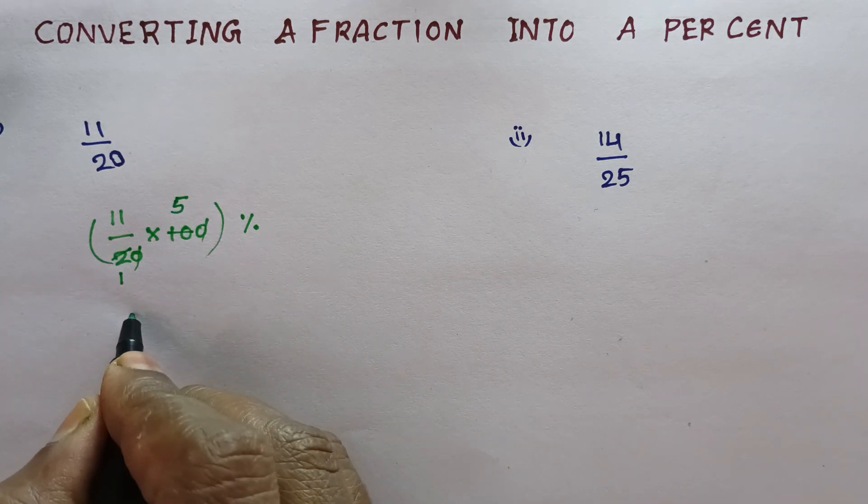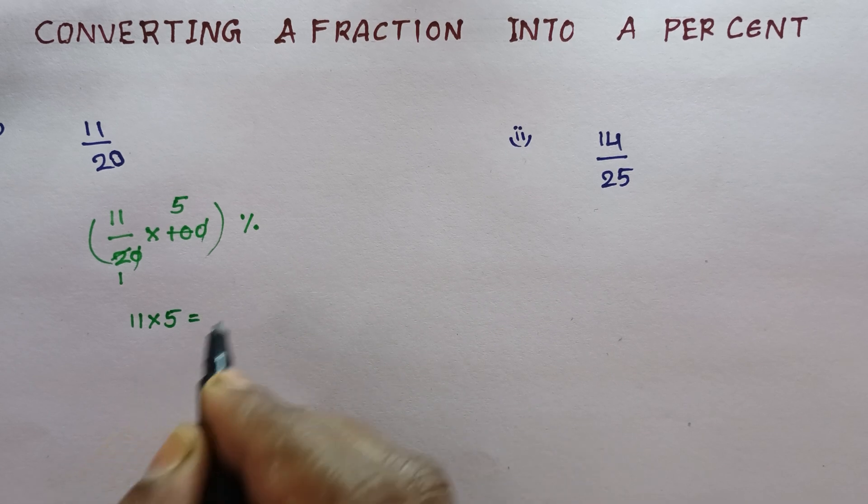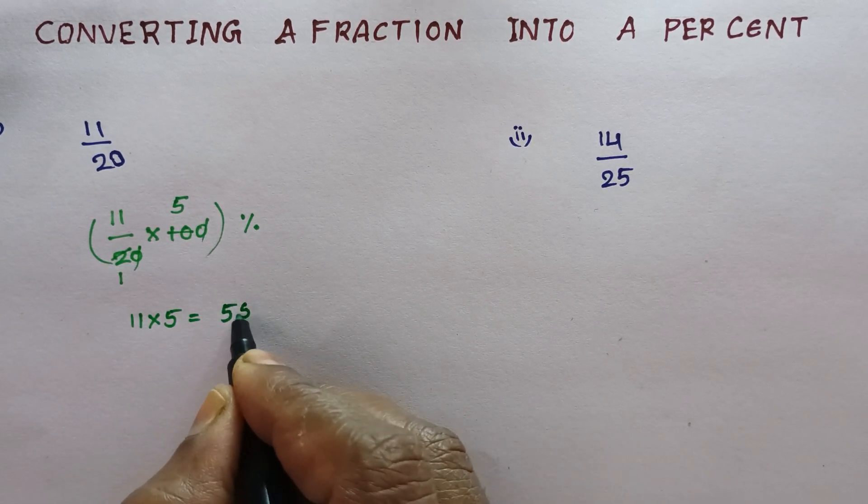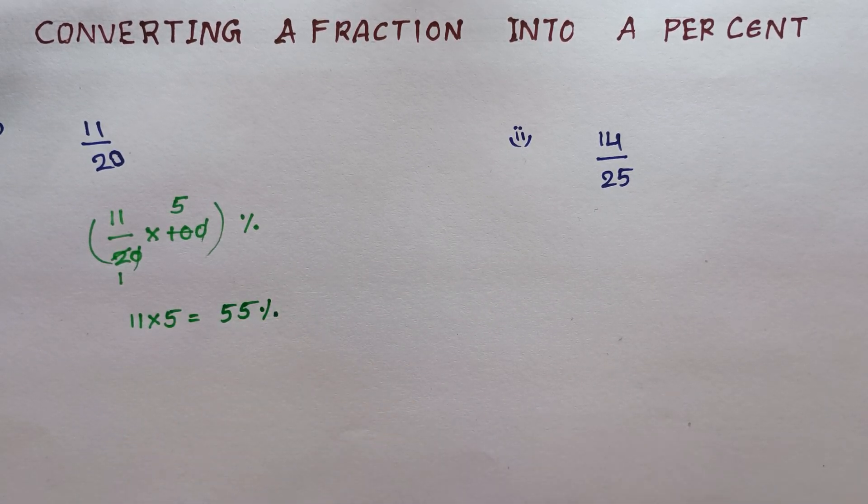So, 11 into 5. 11 into 5 is 55%. The same way,